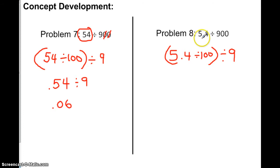The next one. 5 and 4 tenths divided by 900. Well, again, I want to get rid of this. So I'm dividing that by 100. And then I divide the 5 and 4 tenths by 100. So 5 and 4 tenths divided by 100 would be what? 54 thousandths divided by 9. And the answer to that would be 6 thousandths. Is that making sense? So you see the pattern?